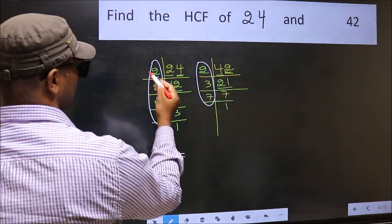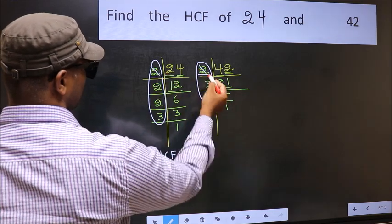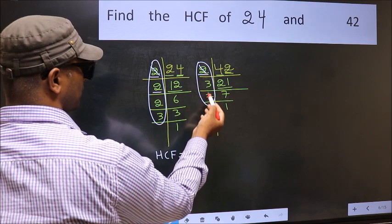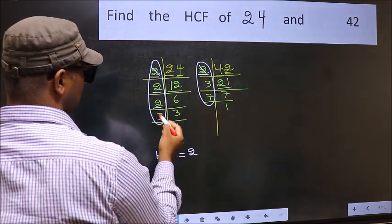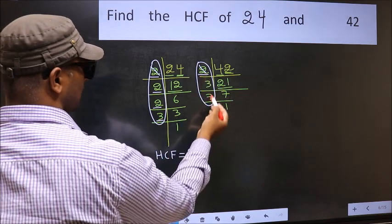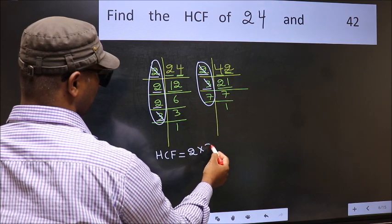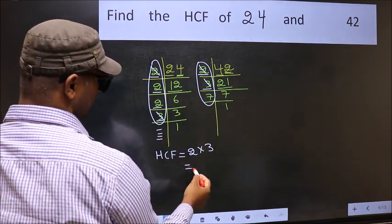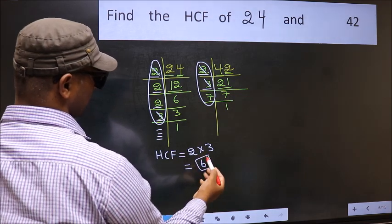Starting with the number 2. Do we have 2 here? Yes. So cut 2 right here. Next number 2, do we have 2 here? No. Next number 2, do we have 2 here? No. Next number 3, do we have 3 here? Yes. So cut 3 right here. No more numbers have been left out. So our HCF is 2 times 3.